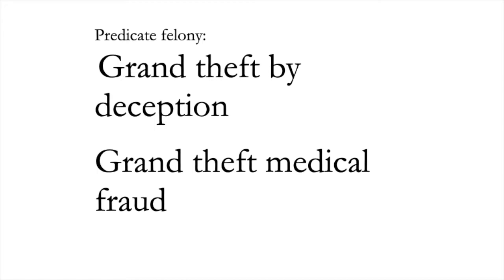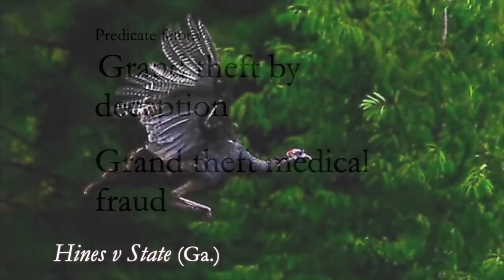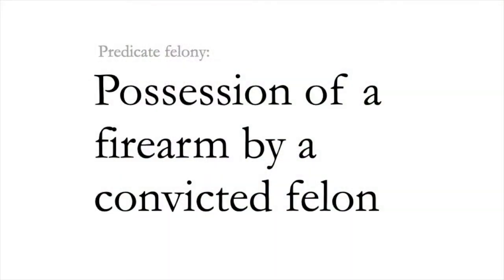A contrasting approach to the question of whether a predicate felony is inherently dangerous can be found in a case decided in Georgia: Hines v. State. Hines accidentally shot a turkey hunting companion. The victim died and Hines was convicted of murder under a felony murder instruction. The predicate was possession of a firearm by a convicted felon. The edited version of the case does not mention that Hines' prior felony was a DUI — driving under the influence of alcohol.